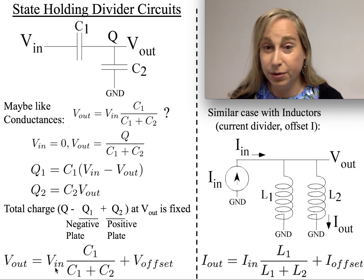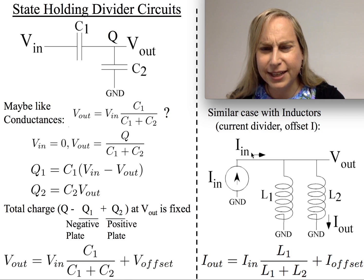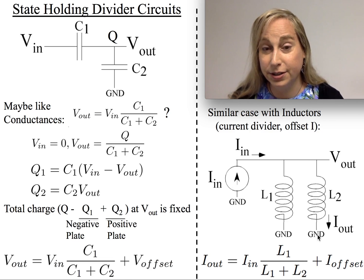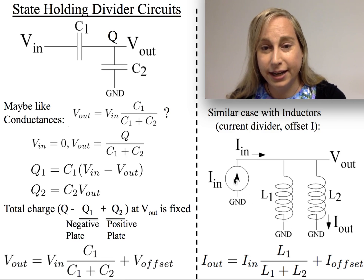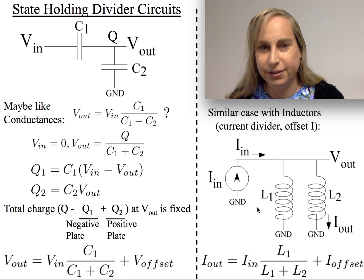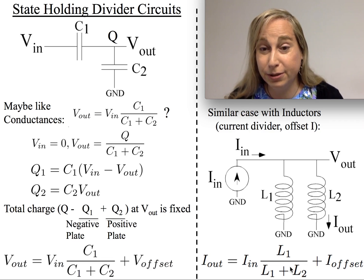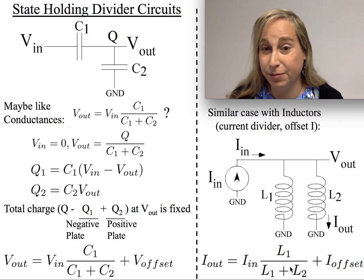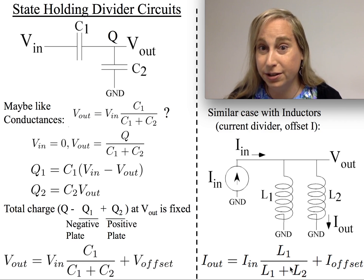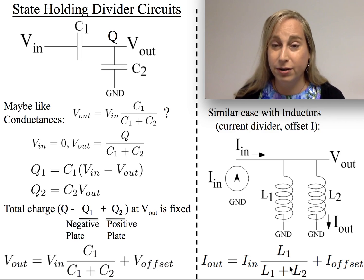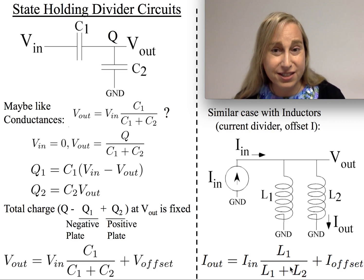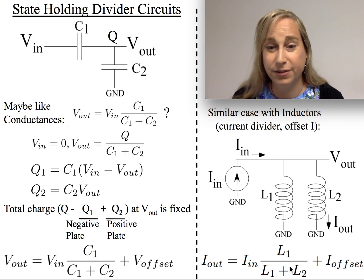By the way, I can do a similar sort of thing for inductors — it's a little less used, but it's certainly relevant. This looks like a current divider instead of a voltage divider, so the ratio would be L1 over L1 plus L2, because that's very typical. But then there's going to be some offset current because of what previous current was being stored in the inductor. We know that inductors are sort of magnetic flux storage, and therefore current storage devices. So these are the kinds of things we see.